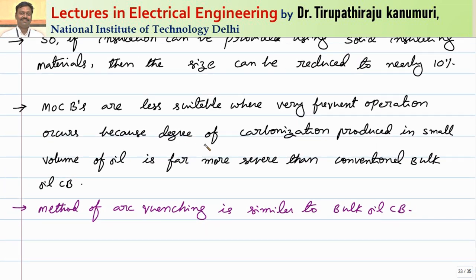There is a disadvantage of the minimum oil circuit breaker compared to the bulk oil circuit breaker. Every time an arc is produced, the oil decomposes and carbon is produced through carbonization. This carbon mixes with the oil and the oil loses its dielectric property. For example, assume 1 kg of carbon is produced per fault. In a bulk OCB with 100 liters of oil, 1 kg is mixed in 100 liters. But the minimum oil circuit breaker has only 10 liters of oil, so 1 kg of carbon is mixed in only 10 liters — the oil spoils at a much faster rate.